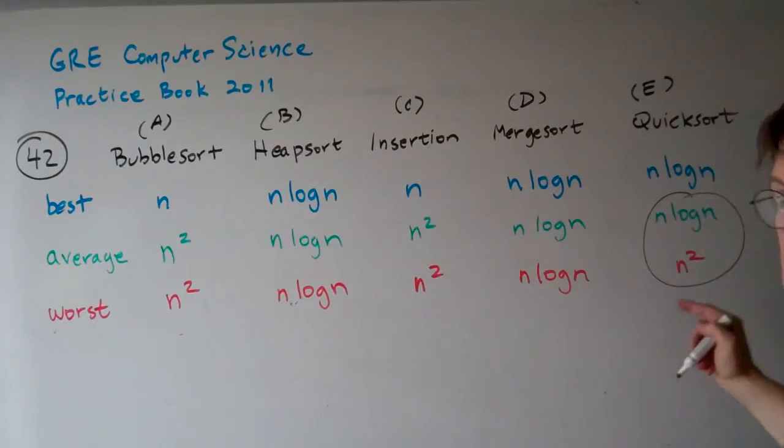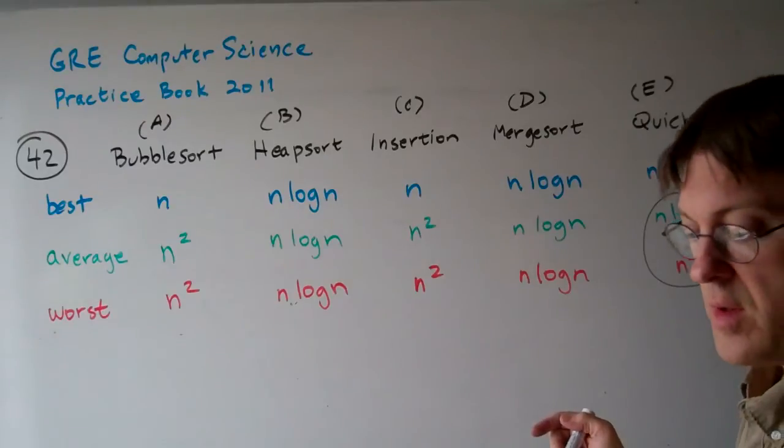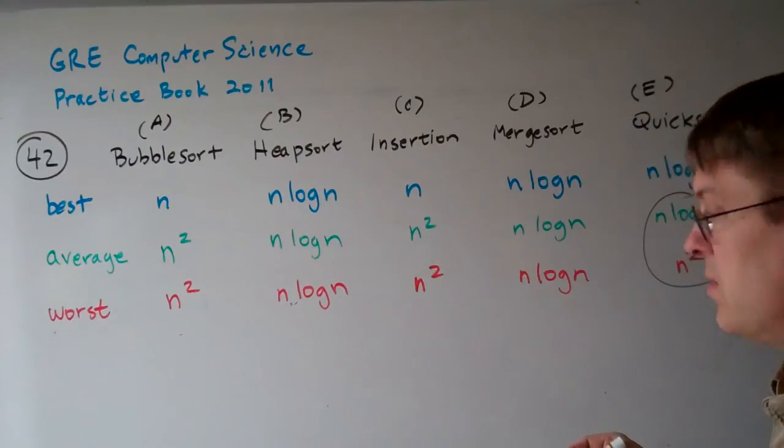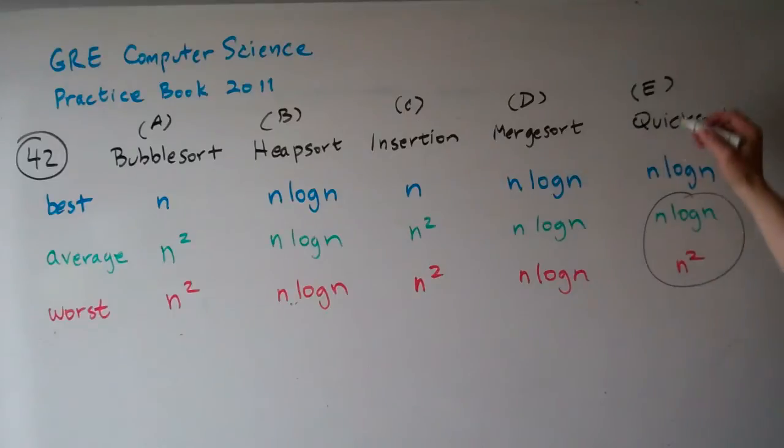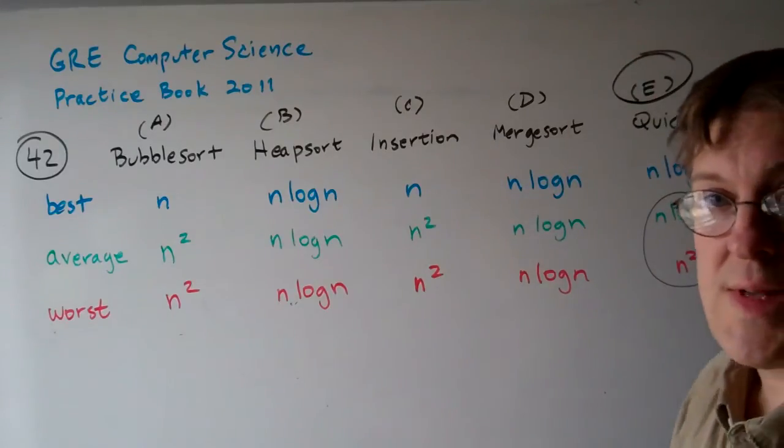Quicksort's average case is significantly better than the worst case, so the RTR ratio is closer to zero. So the answer to 42 is E.